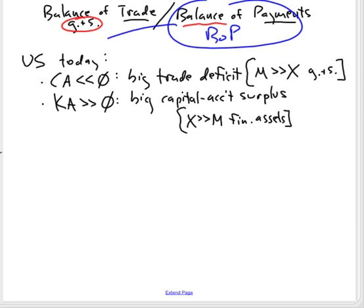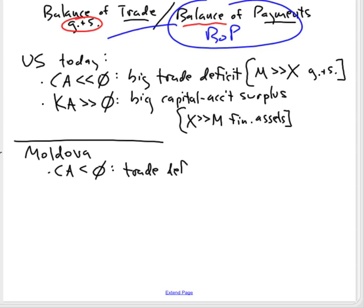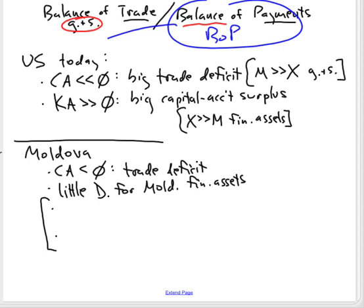But it might be different if you're a country like Moldova. If there's little demand out in the world for Moldovan financial assets — which I suspect is the case — then it's hard to export them. It's hard to generate a surplus on capital account to finance your deficit on current account. So there are two more possibilities. Moldova might end up having a balance of payments deficit because there's no surplus on capital account big enough to cover their current account deficit.